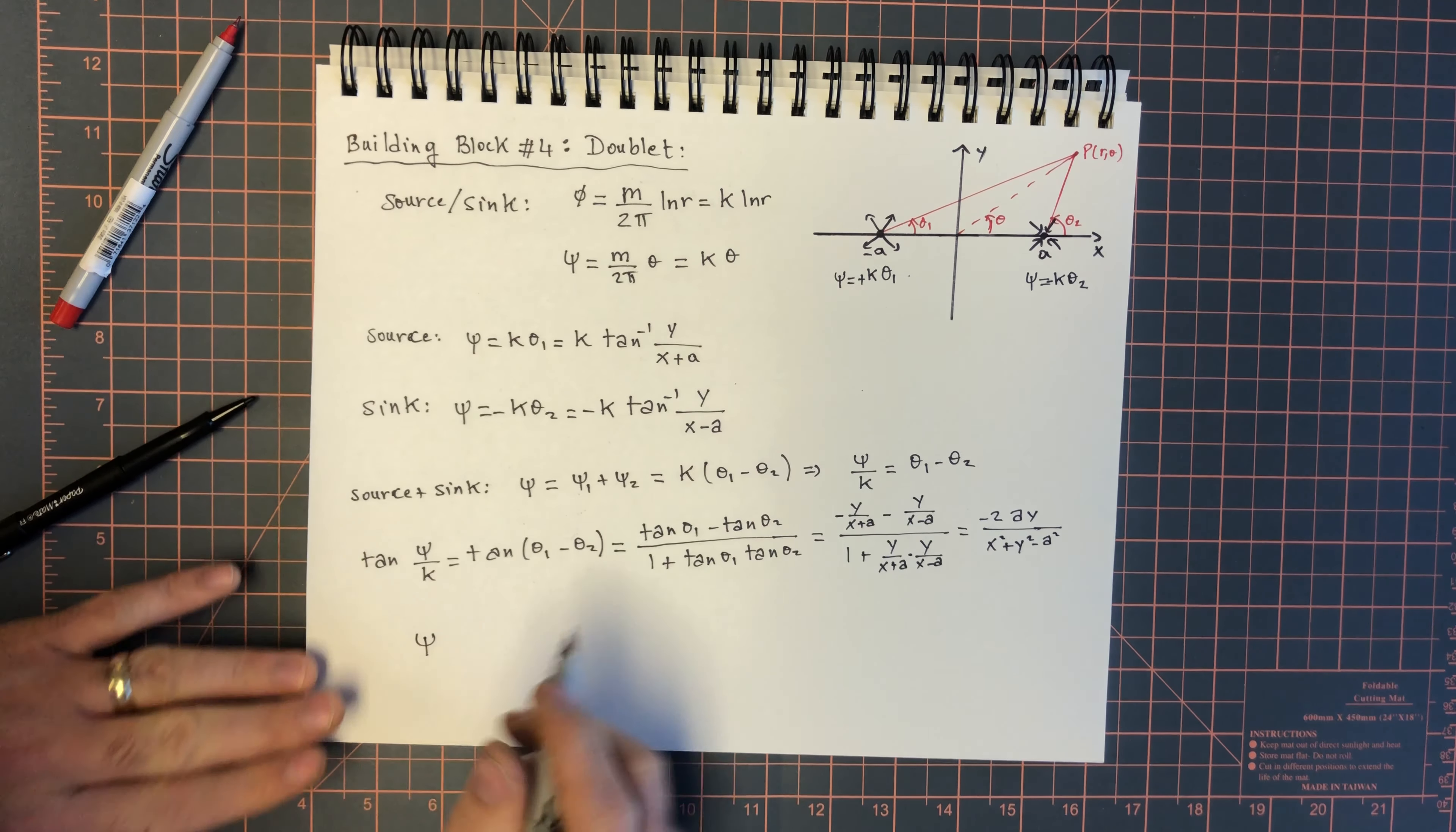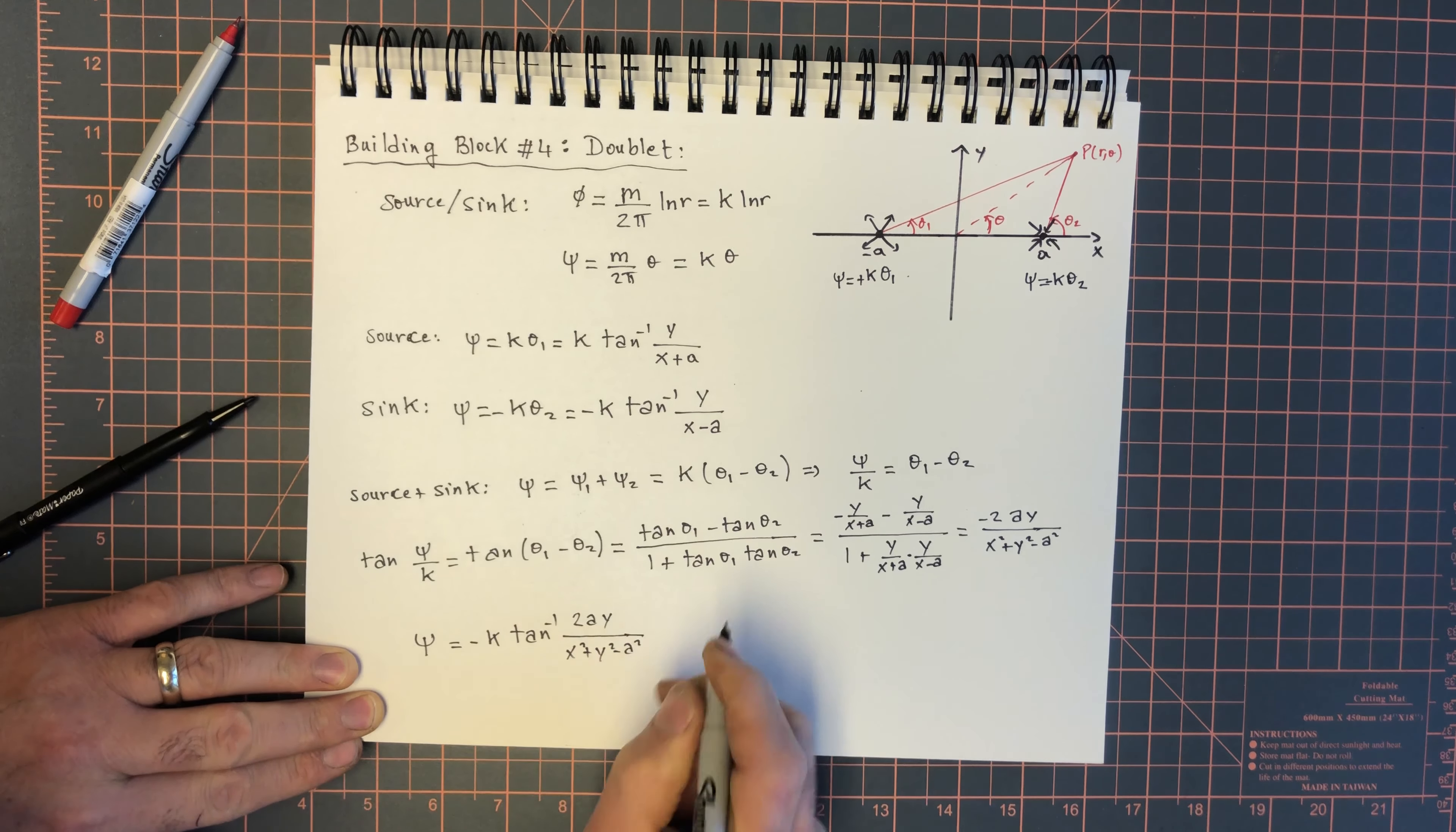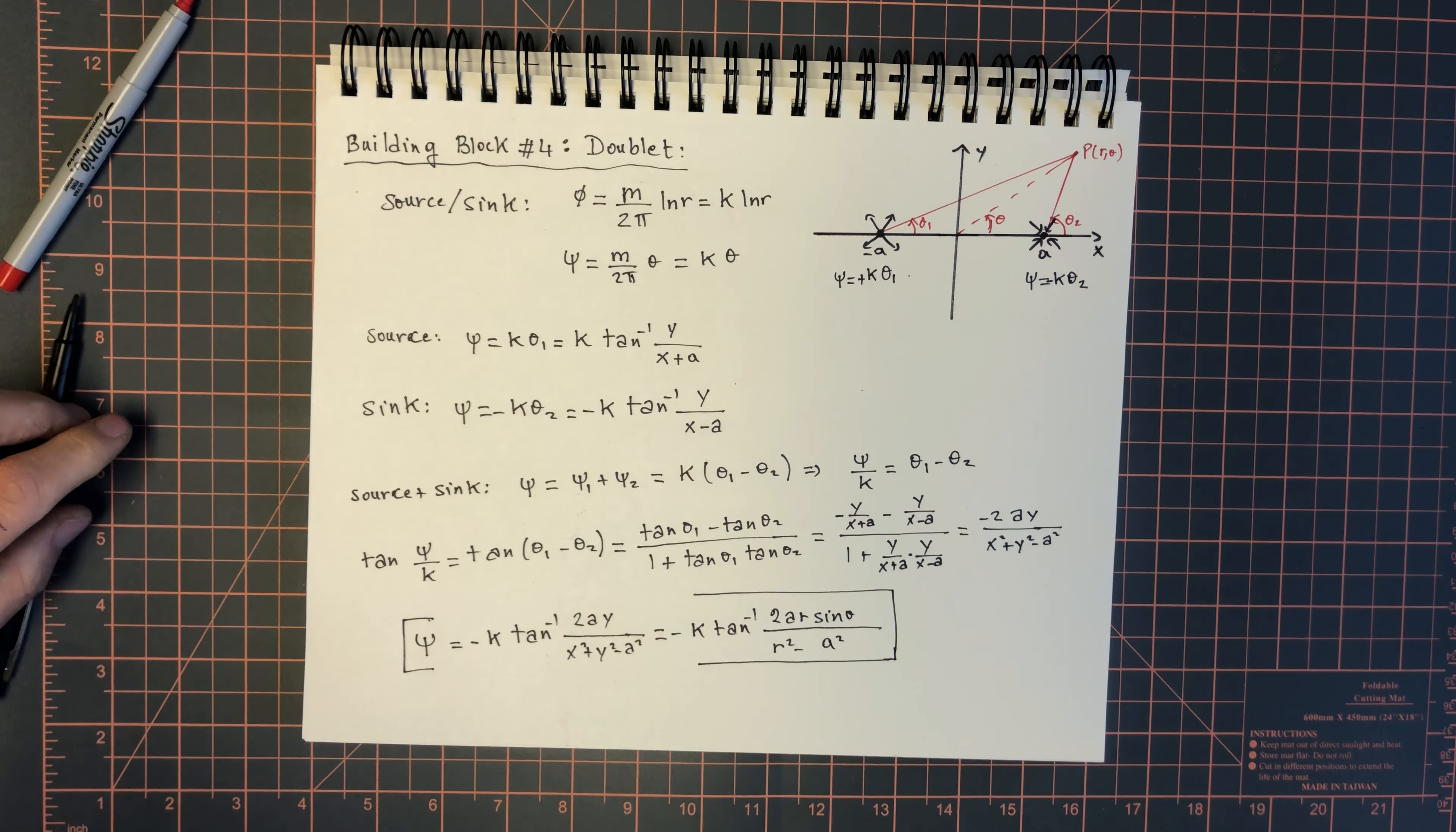Finally, psi - the reason we did all this is I want to express this in terms of the absolute coordinates x and y or r and theta. So then, psi is simply minus k inverse tan 2 ay over x squared plus y squared minus a squared. And that's equal to minus k tan arc tan of 2 ay over r squared minus a squared. That's a very nice expression for psi. I haven't done anything special here except we added a source and a sink.